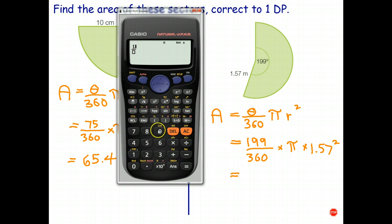Once again I like to set it out exactly as it looks in the equation, there's less chance of making a mistake. So 199 over 360, right arrow, times, and the pi button comes from shift and pi, times, and I'm going to square it.